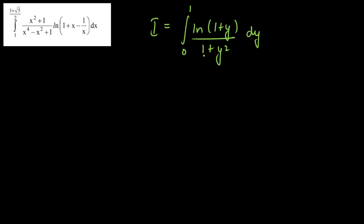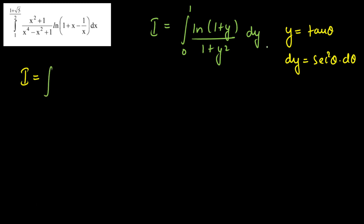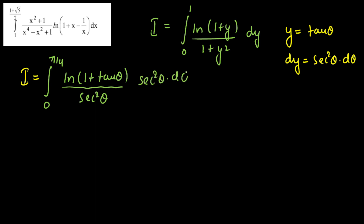Whenever we see 1 + y², we substitute y = tan θ, so dy = sec²θ dθ. Converting limits: when y = 0, tan θ = 0 so θ = 0; when y = 1, tan θ = 1 so θ = π/4. The integral becomes ∫₀^(π/4) ln(1 + tan θ) / sec²θ · sec²θ dθ. The sec²θ cancels, giving ∫₀^(π/4) ln(1 + tan θ) dθ.